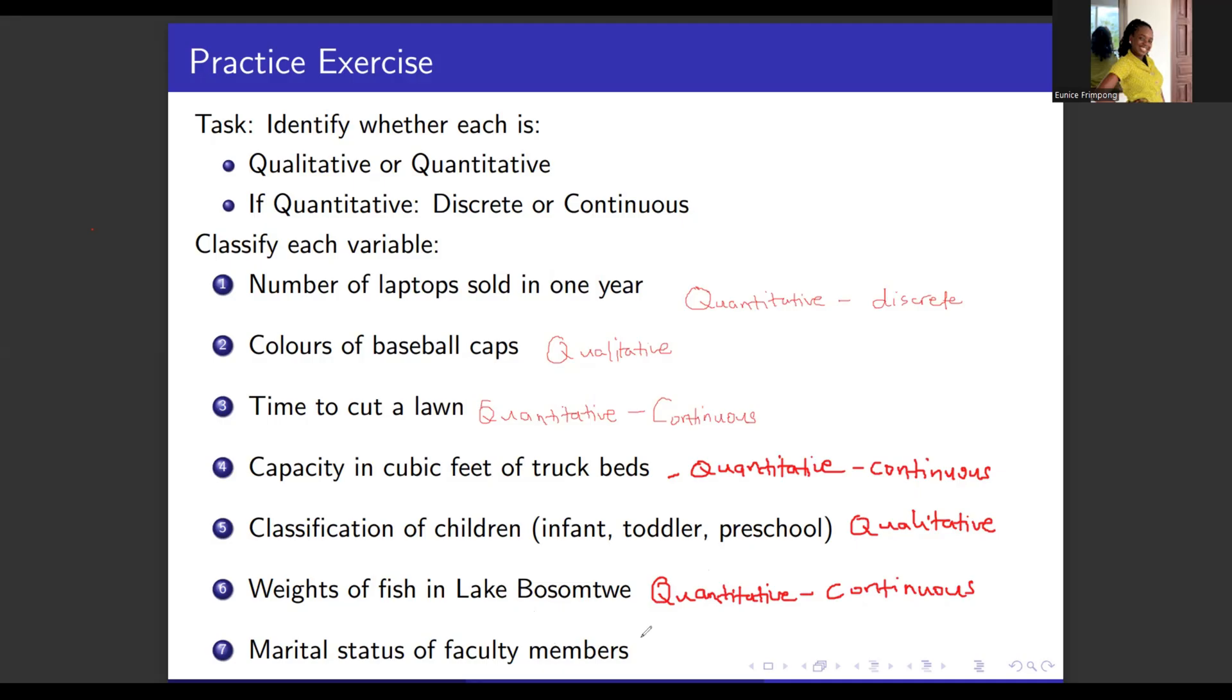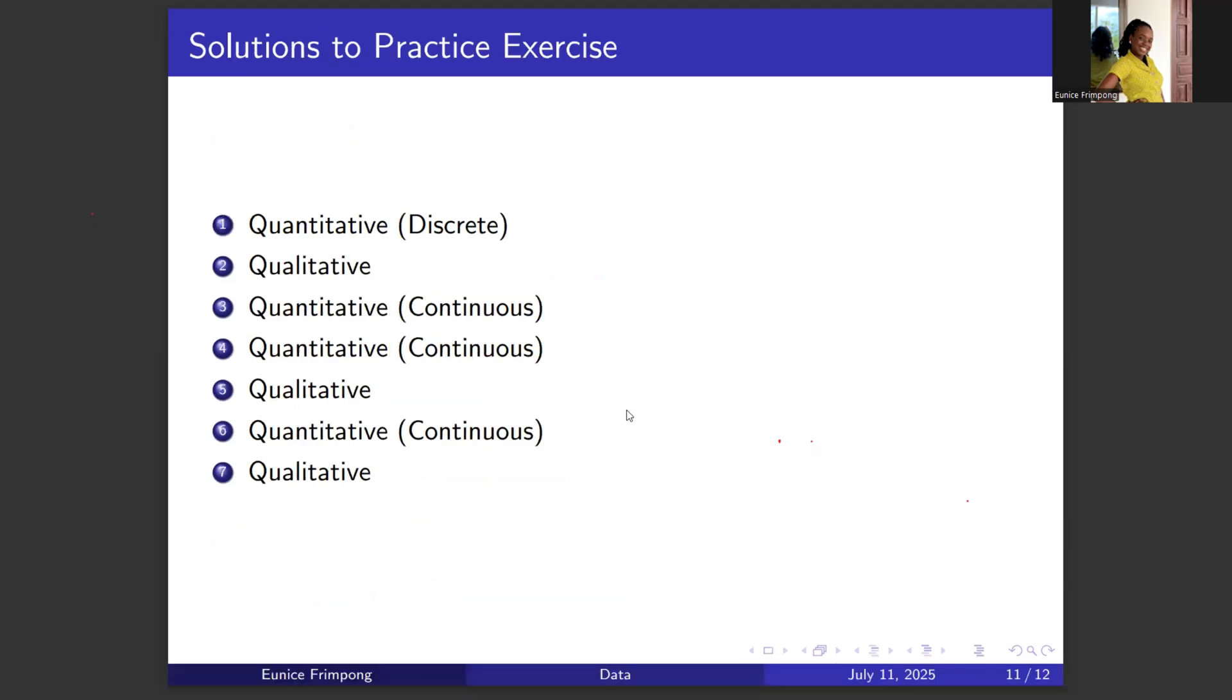Marital status of faculty members. Marital status, we don't use numbers to represent. We use a description, so we will take this to be qualitative. So with this, we've described or we have classified each of these variables as either quantitative or qualitative, and if quantitative, either discrete or continuous. This is the solution to what we just did.